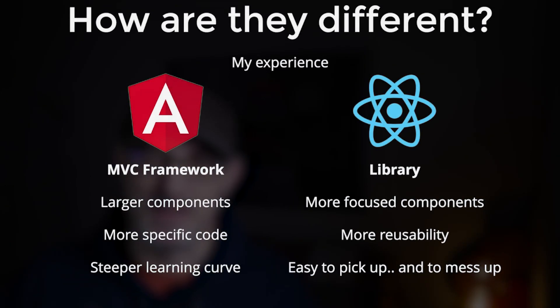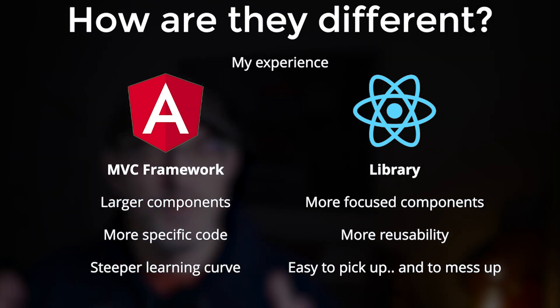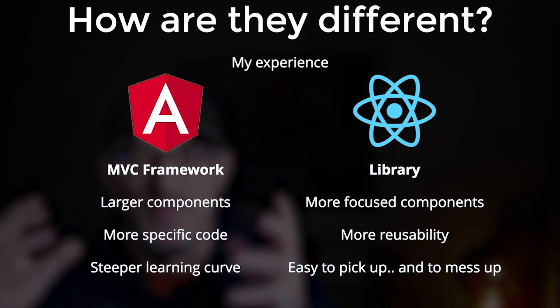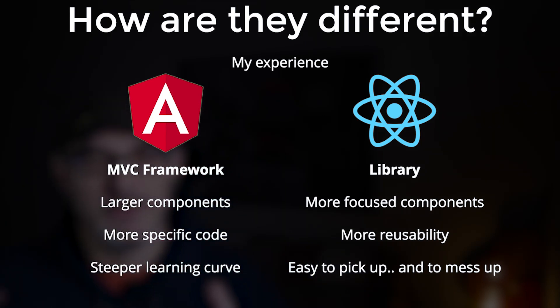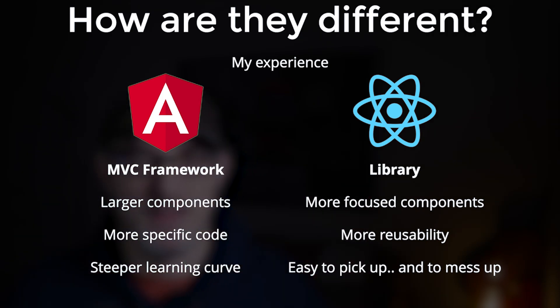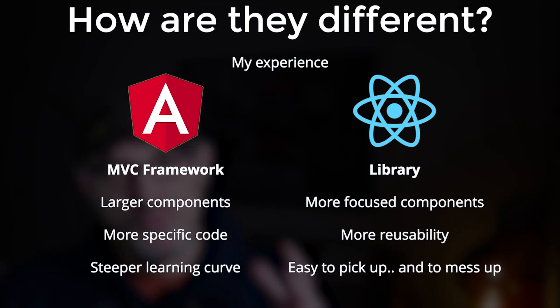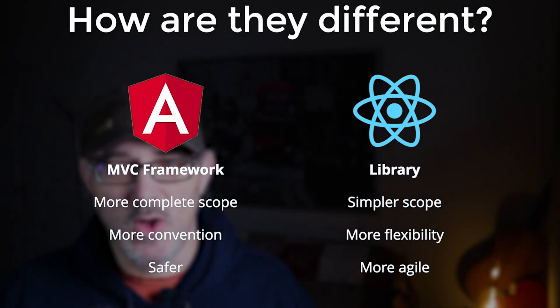How are Angular and React different in practice? In my experience, the differences in structure lead to bigger components with larger scope in Angular, whereas React leads to more focused components. Reusing components is also more complex in Angular, whereas doing so in React requires minimal effort. In React, everything feels more focused and more lightweight. Because Angular is a fully-fledged framework, it provides more functionality out of the box like routing, translation, or two-way state management, but has a steeper learning curve. React is a focused library with way less structure, making it easier to learn and giving it greater flexibility. Angular provides security and structure, where React provides agility and speed.